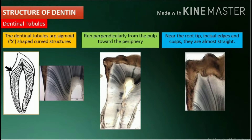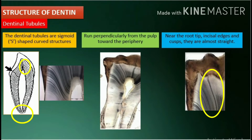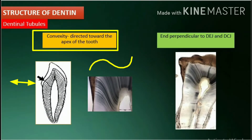The dentinal tubules are sigmoid S-shaped curved structures which run perpendicularly from the pulp toward the periphery. Near the root tip, incisal edges, and cusps, the dentinal tubules are almost straight. The first convexity of the doubly curved dentinal tubules is directed towards the apex of the tooth.